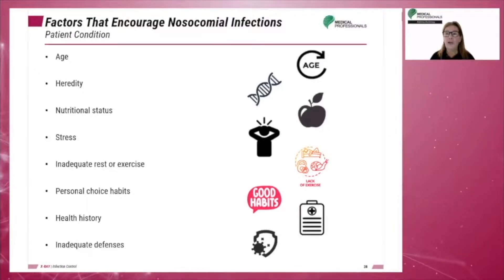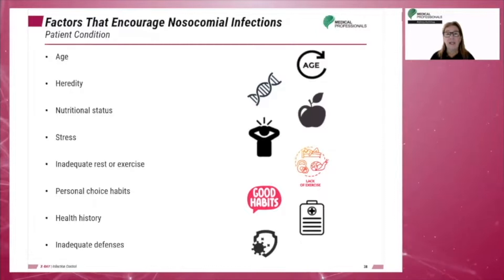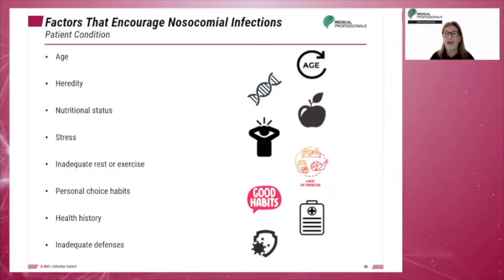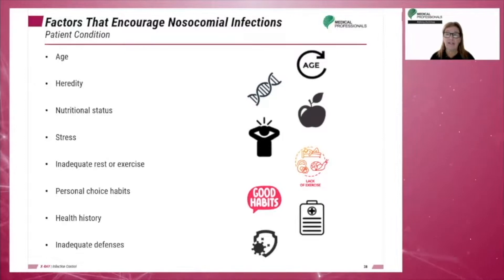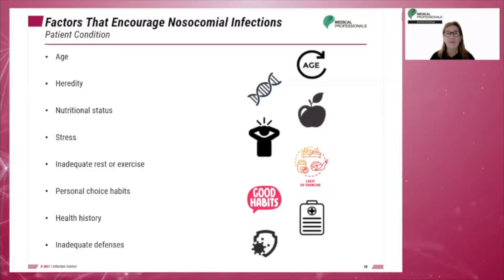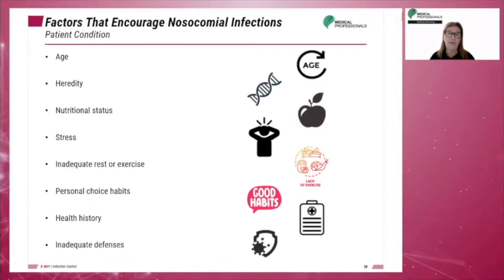Normal flora for one person may be life-threatening to another because each individual is different. The following factors can affect the patient's likeliness to get an infection. Age: as the patient ages, the immune system becomes weaker, leading to more infections.